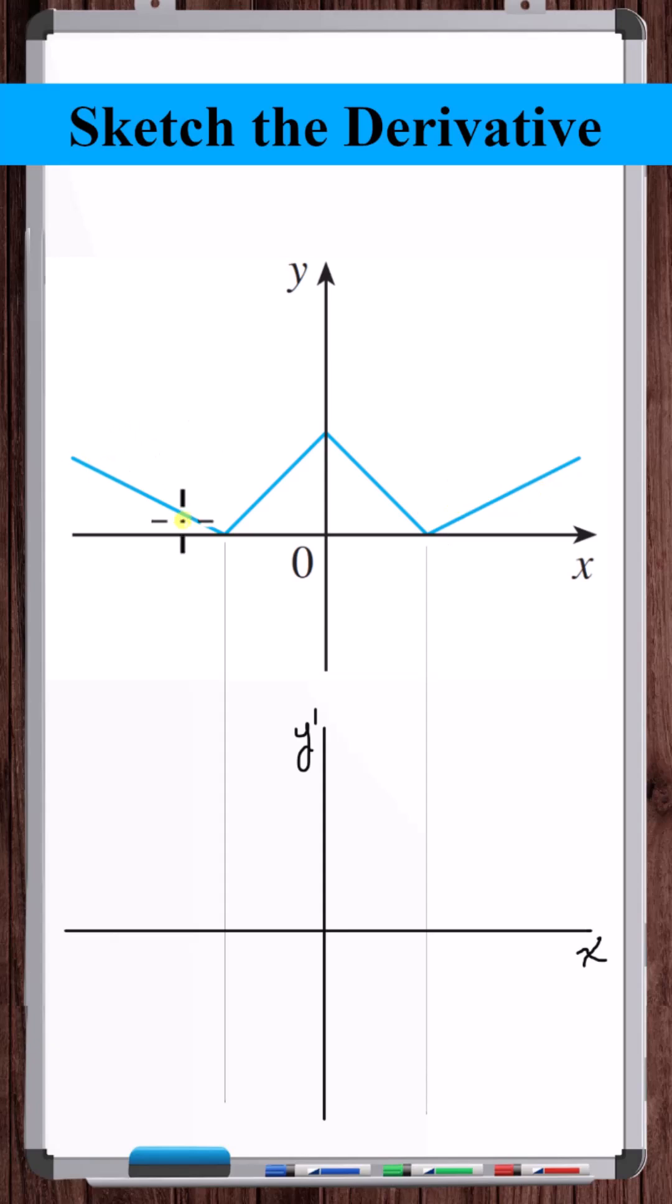So the derivative graph is going to be this constant value, then jump to this constant value, then jump to this constant value, then jump to this constant value.